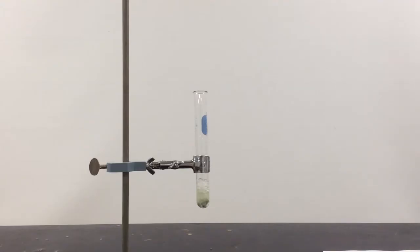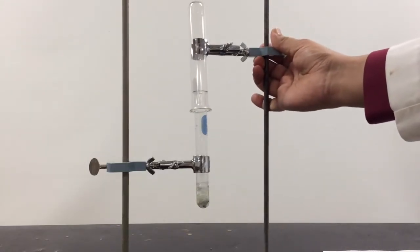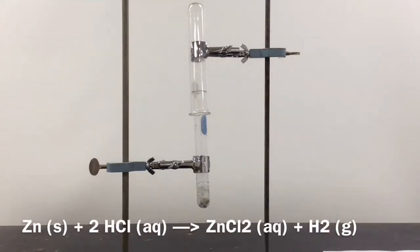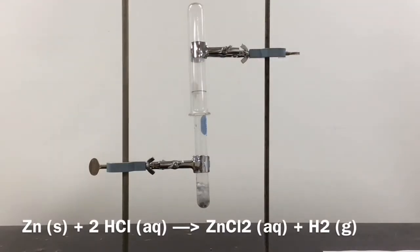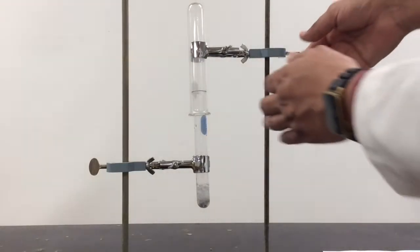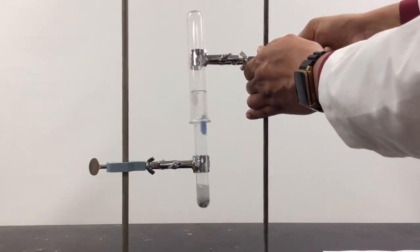Now those are bubbles of hydrogen gas. I'm making quite a bit of hydrogen gas here, so I'm going to put this other test tube on top so I can collect as much of that hydrogen gas as possible. And since hydrogen is less dense than air, most of that hydrogen should stay in the test tube.